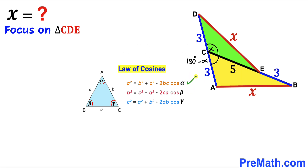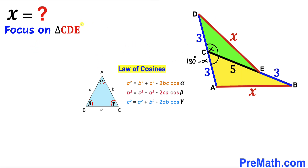We'll focus on the first formula: a² = b² + c² − 2bc·cos(alpha). Here, alpha is our angle, the opposite side is a, and the other two sides are b and c. We are going to apply this law of cosines to the green triangle CDE, giving us x² equals the square of the two other sides.